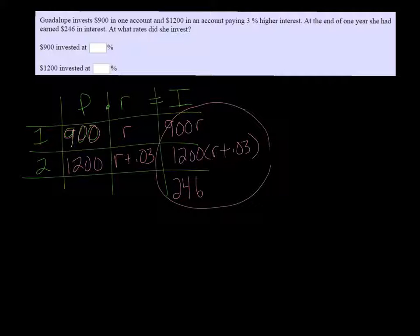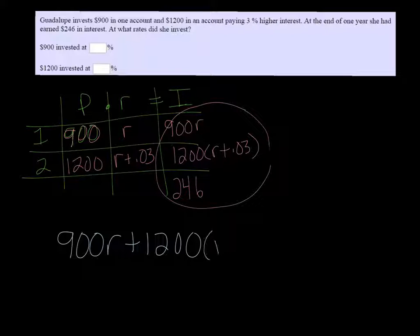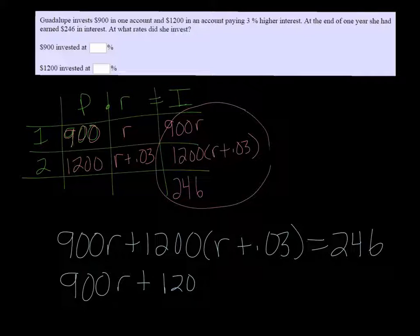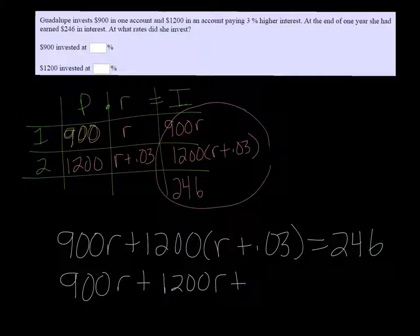Our equation is 900R plus 1,200 times R plus 0.03 equals 246. So that's 900R plus 1,200R plus 0.03 times 1,200, that's 36, equals 246.